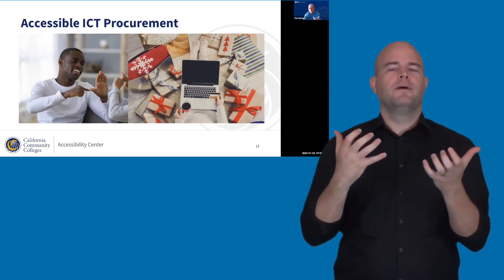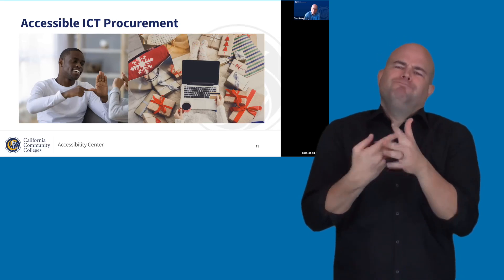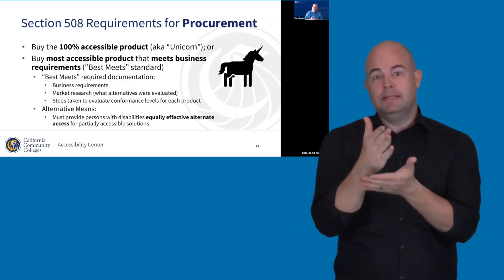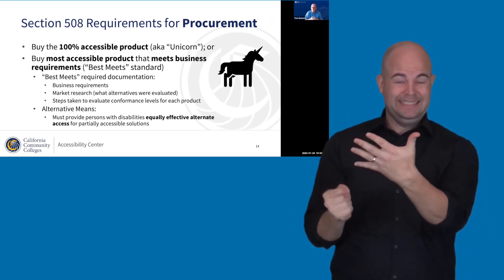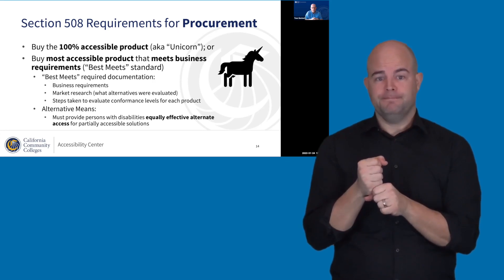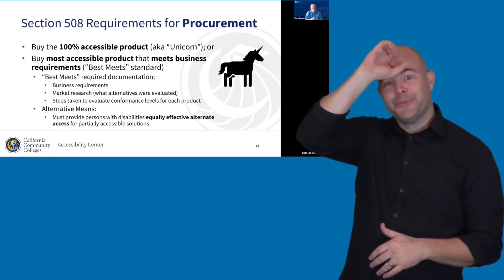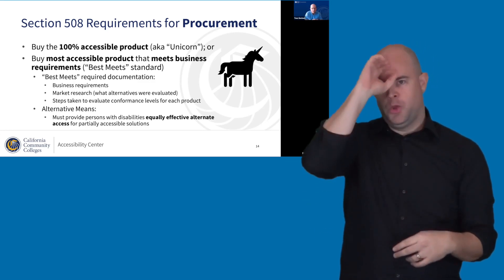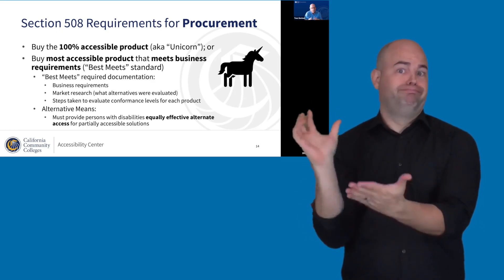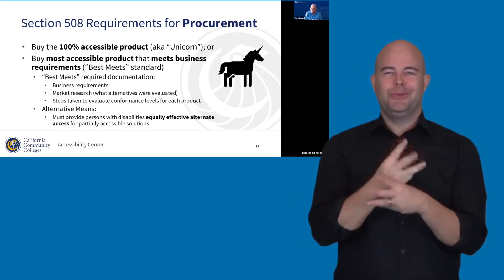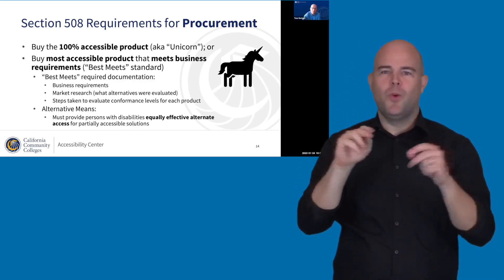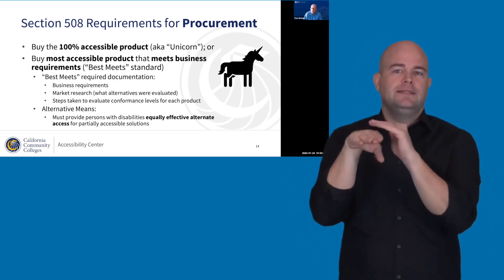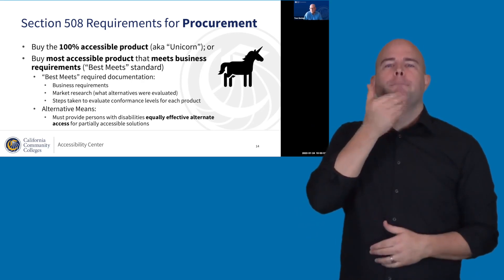Now let's get into how to implement accessible ICT procurement processes. Under Section 508, there are two requirements when it comes to procurement. If you can find a 100% accessible product — what I'm calling a unicorn — you've satisfied the requirements. But in the real world, there aren't many fully accessible products. So what we're required to do is buy the most accessible product that meets our business requirements — this is known as the best meets standard or best meets exception.